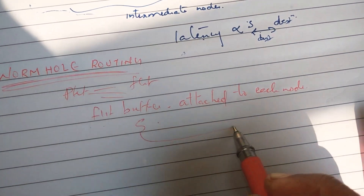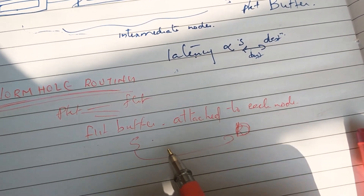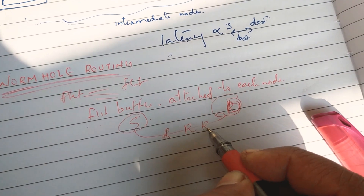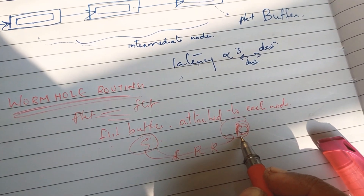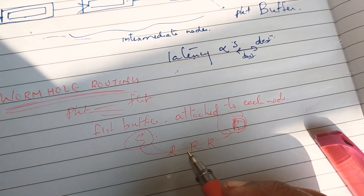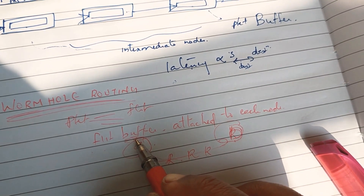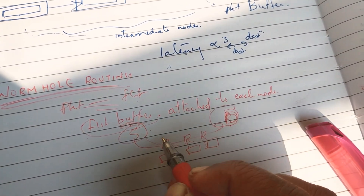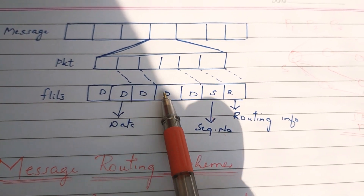In the source node, we transmit to the destination node. The transmission from source node to destination node is done through a sequence of routers. In the source node, we divide the packet into small individual flits.